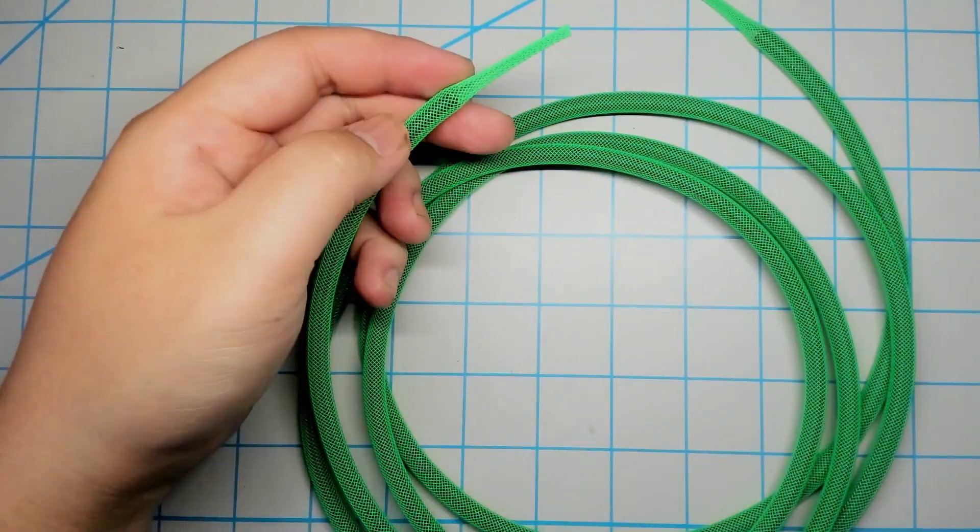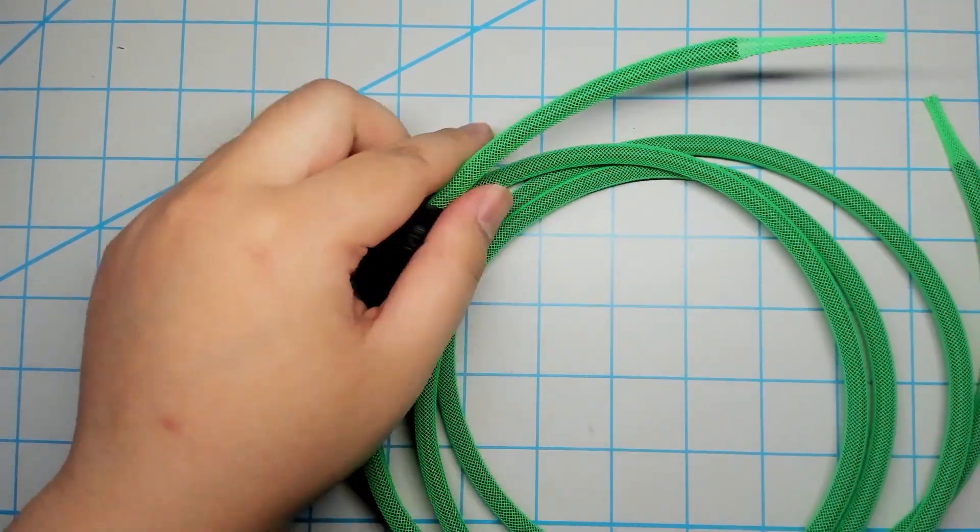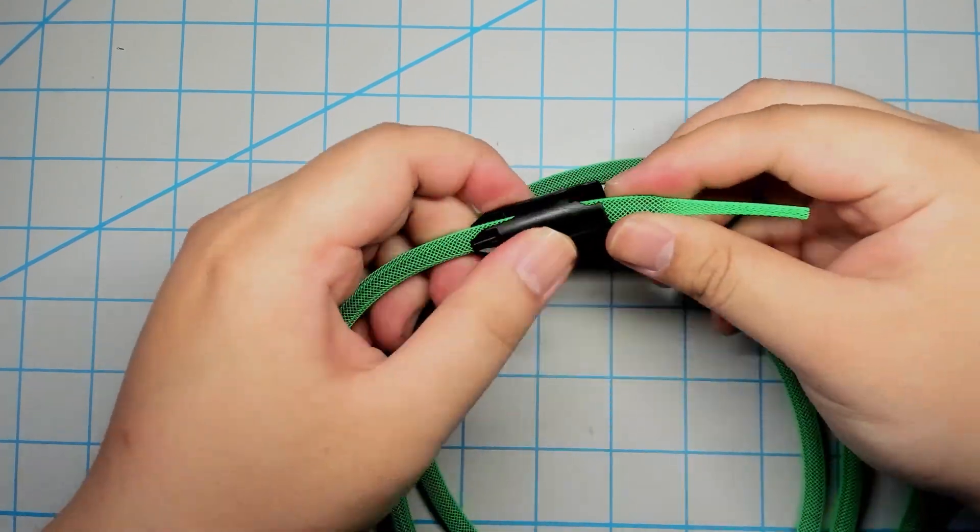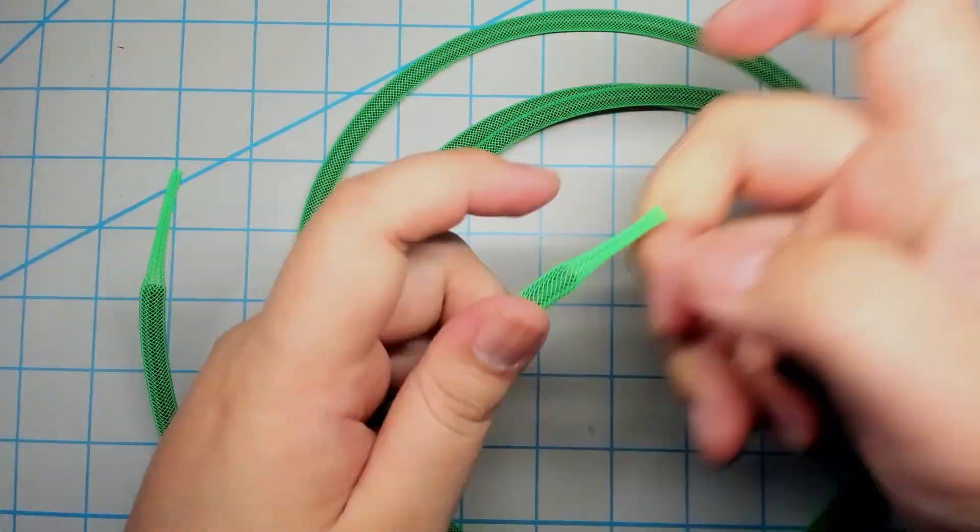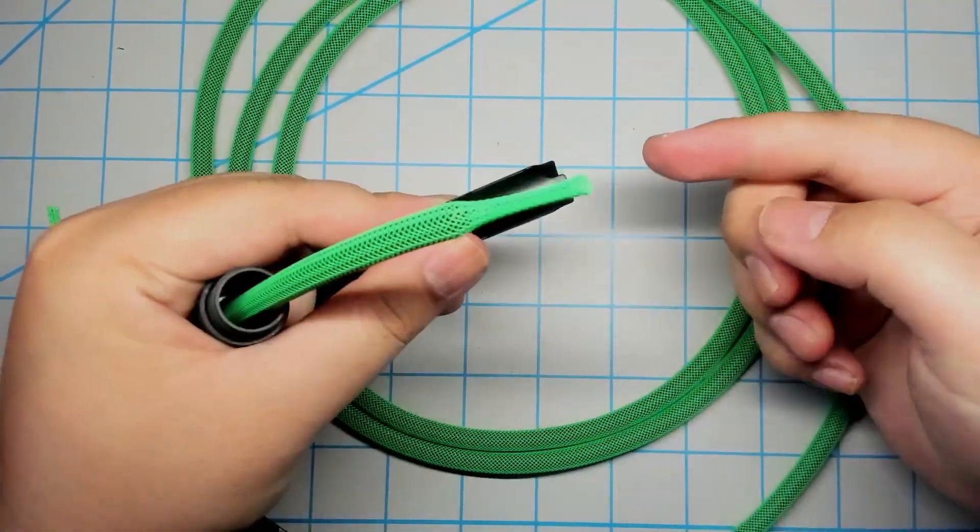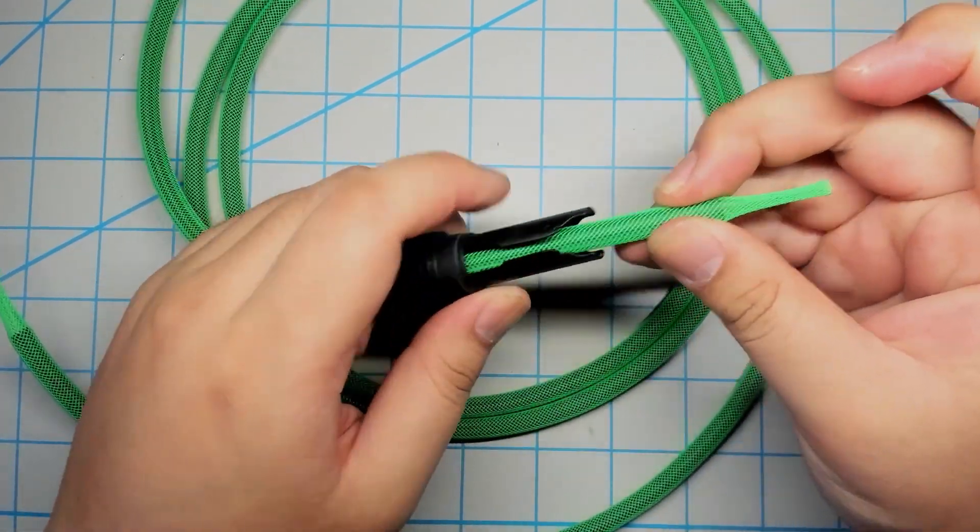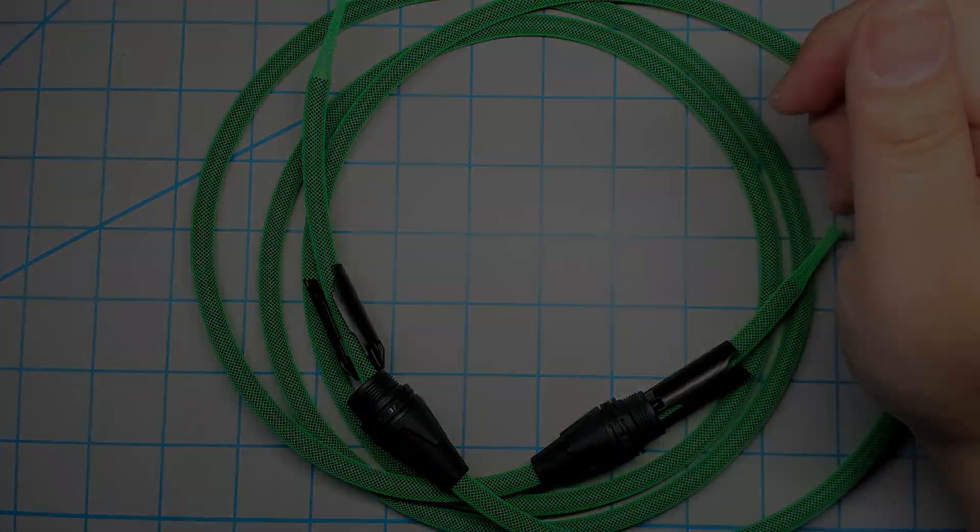Next thing that I do is add the rubber button onto my cable. The excess sleeving makes this really easy to do. I then also add the plastic part of the connector, which you could probably add later but I like doing this at this point to make sure that it fits onto the sleeved cable. I'll go ahead and do this for both sides.